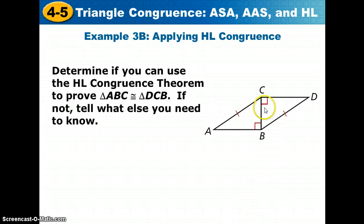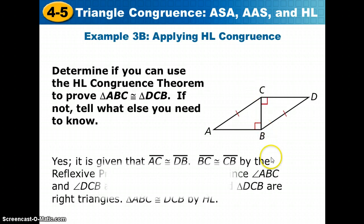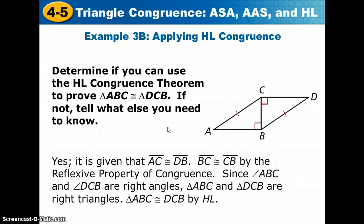Let's try part B. We have two right triangles here. We are given AC is congruent to BD. Those are each a hypotenuse of their respective triangles. So the hypotenii are congruent. And again, they share a leg, CB. It's given that AC is congruent to DB. BC is congruent to CB by the reflexive property. Since angle ABC and angle DCB are right angles, triangle ABC and triangle DCB are right triangles by HL. Or they are congruent triangles by HL.